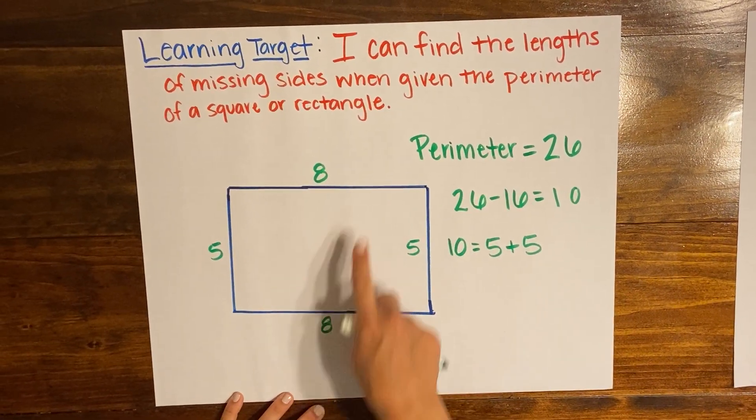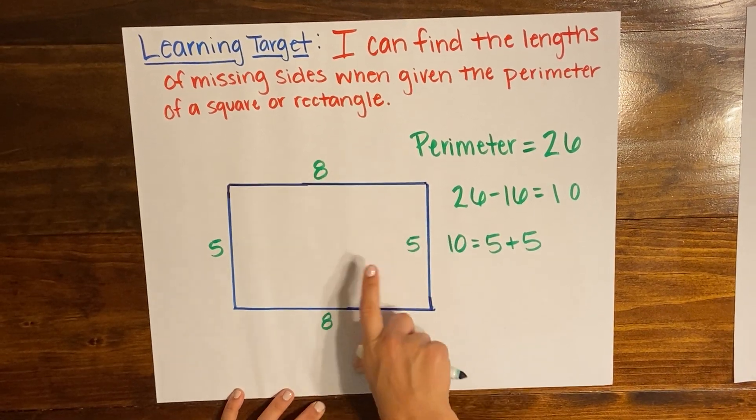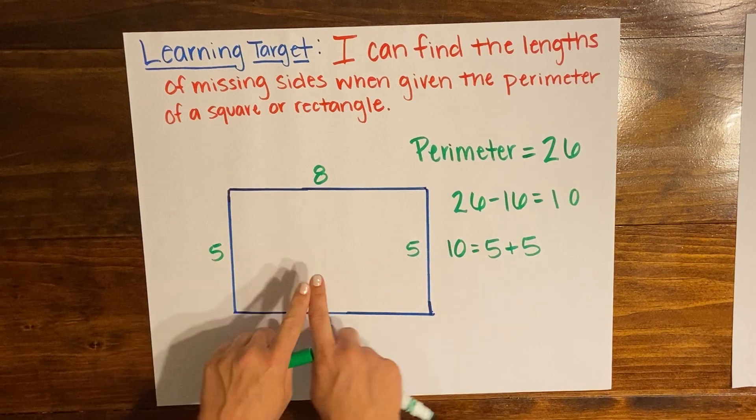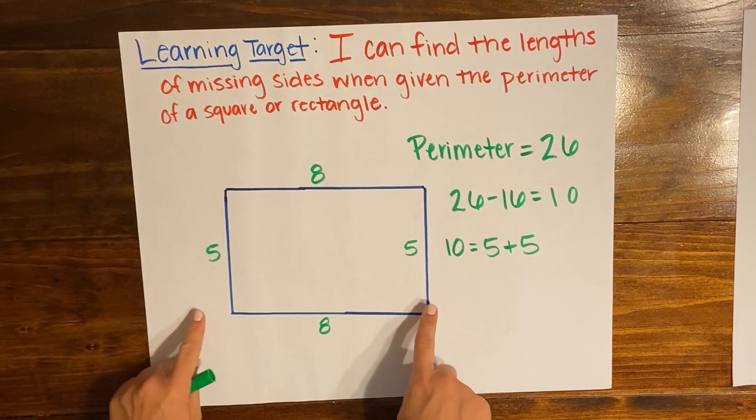So when I look at my rectangle I'm gonna have 8 and 8 because we were given the 8 and we know they're opposites, and then 5 and 5 because those are gonna be the same because it's a rectangle.